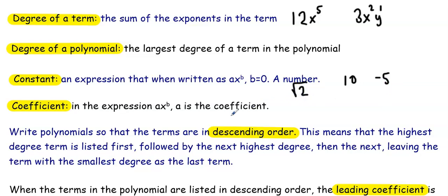A coefficient in the expression ax^b, a is the coefficient. So in the expression 5x³, 5 is the coefficient. And this term has a degree of 3.